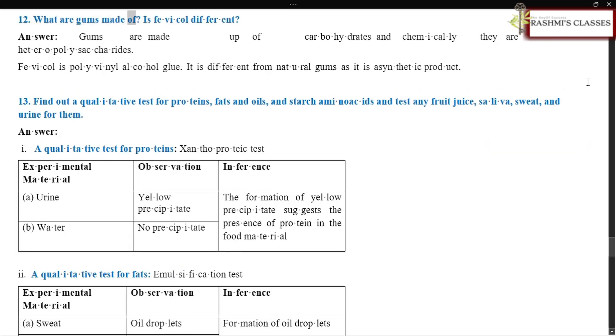What are gums made of? Is Fevacol different? Answer. Gums are made up of carbohydrates and chemically they are heteropolysaccharides. Fevacol is polyvinyl alcohol glue. It is different from natural gums as it is a synthetic product.